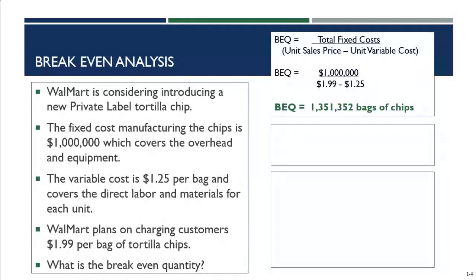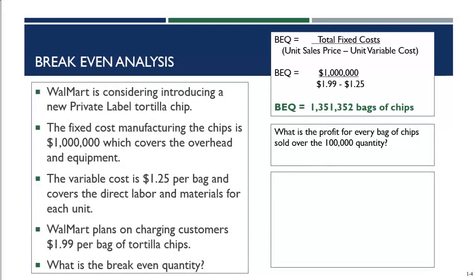What is Walmart's profit for every bag of chips sold over that 1,351,352? To get profit, we take unit sales price minus unit variable cost: $1.99 − $1.25 = $0.74. So Walmart makes a profit of $0.74 on every bag of tortilla chips they sell over the 1,351,352 break-even number.